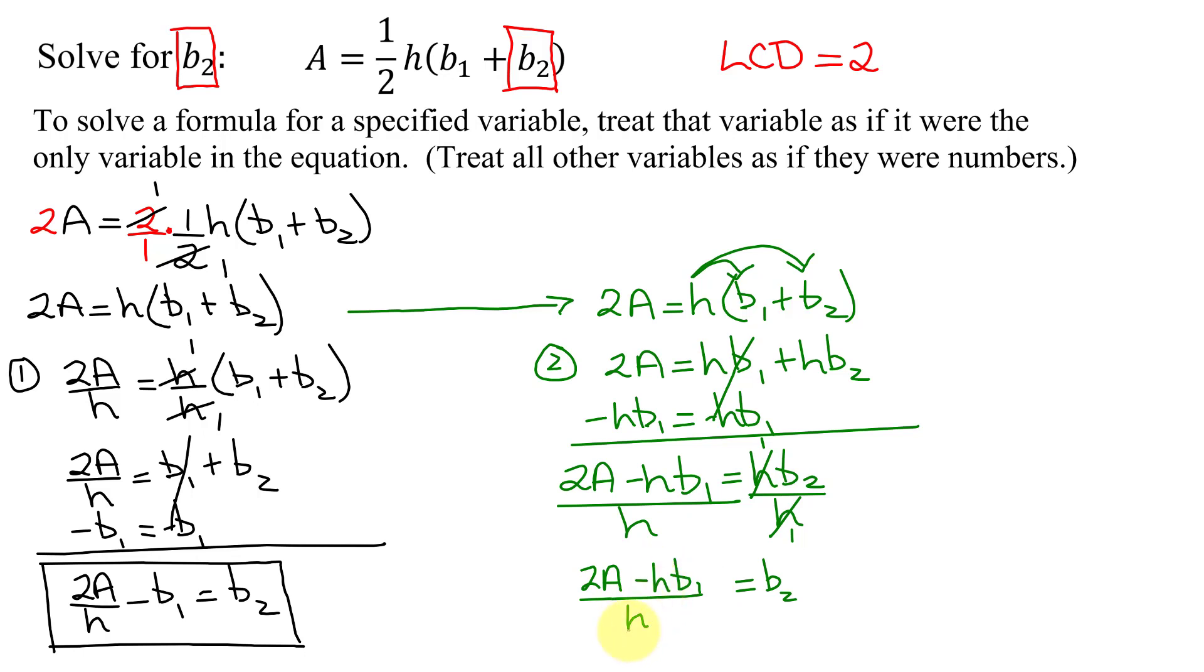b2 equals 2A minus hb1 over h. I cannot reduce these two h's since this h in the numerator is not a common factor of the whole numerator. So that is a second method of solving this problem.